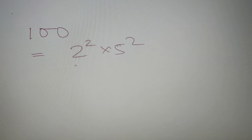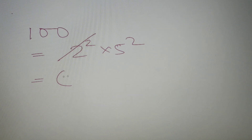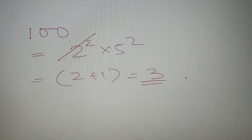According to our first question, we have to find the number of odd factors for the number 100. First we prime factorize 100: 100 = 2² × 5². Now we exclude all the powers of 2 and apply the formula. Since there is only the power of 5 remaining, we write 2 + 1, which gives us 3. So there are only 3 odd factors of the number 100.